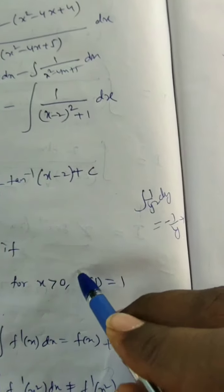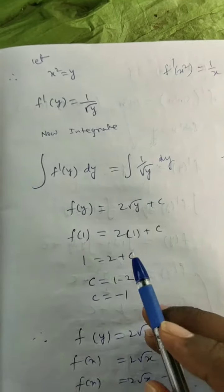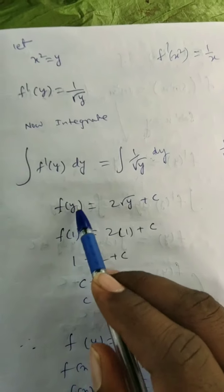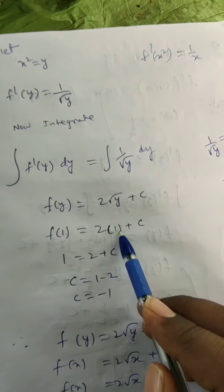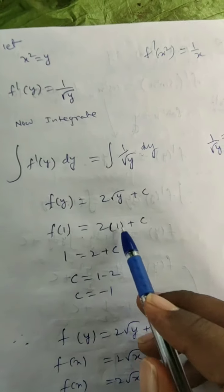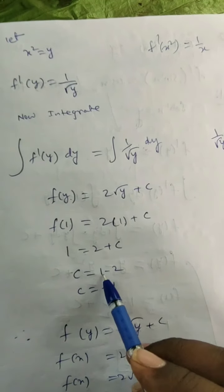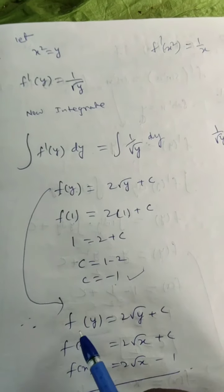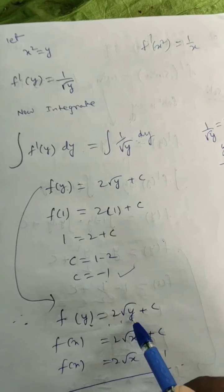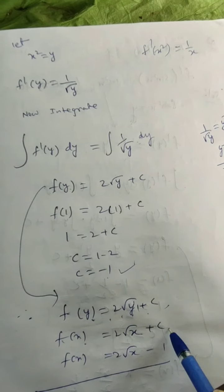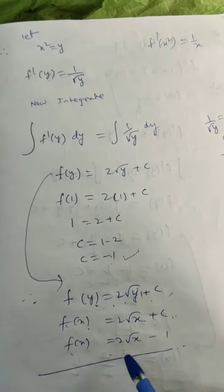Using the condition f(1) = 1: f(1) = 2√1 + c = 2 + c = 1, so c = −1. Replacing y with x, the answer is f(x) = 2√x − 1.